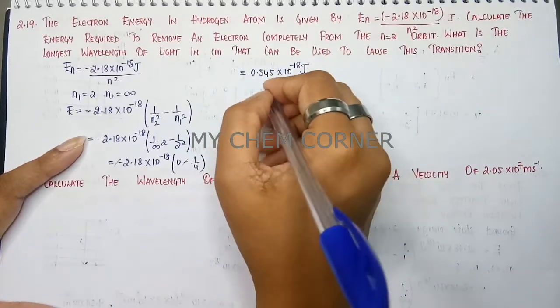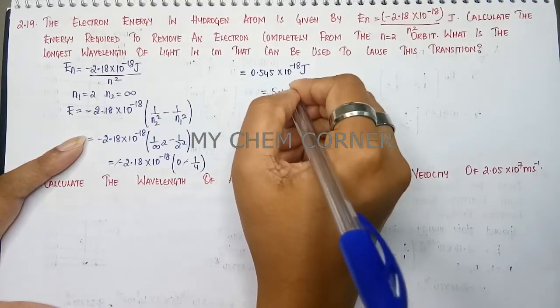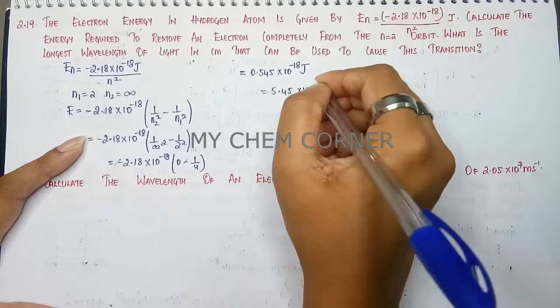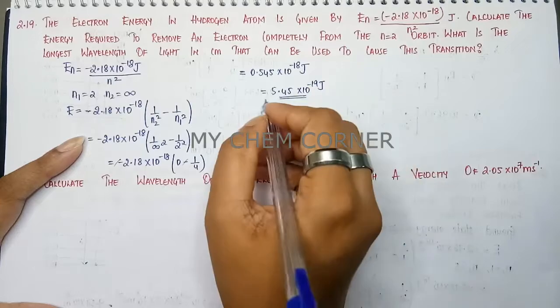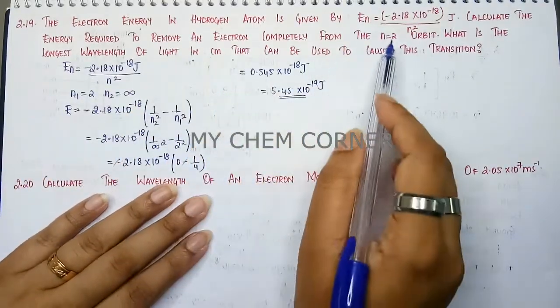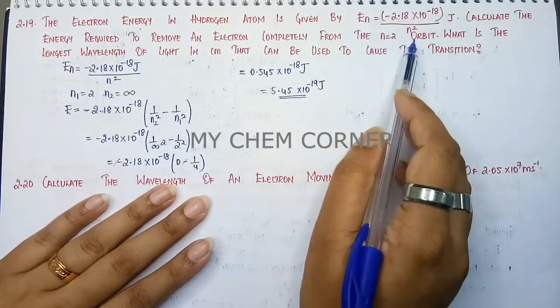When you shift the decimal to the right, it will become 5.45 into 10 to the power minus 19 Joule. Now, this is going to be the energy required to remove an electron completely from N equals 2 orbit.